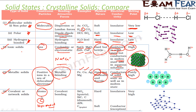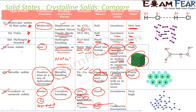Talking about the covalent or network solids — they have atoms as constituent particles and covalent bonding, which is also strong bonding. So they are also hard. Examples are SiO₂, silicon carbide, and carbon — that is diamond or graphite. The exception is graphite, which is soft. They are also insulators because they don't have free electrons, and the melting point is also very high. This is the example of diamond.